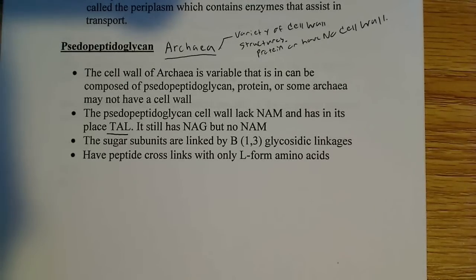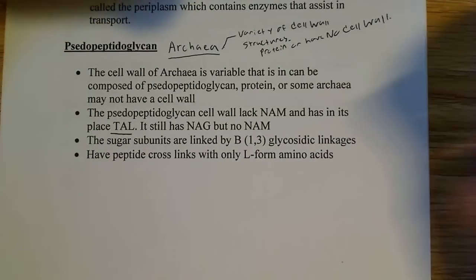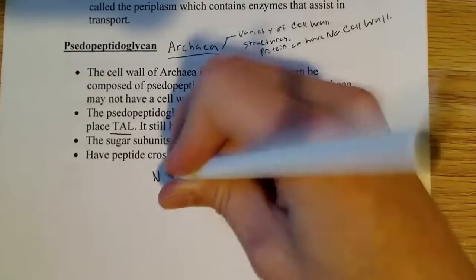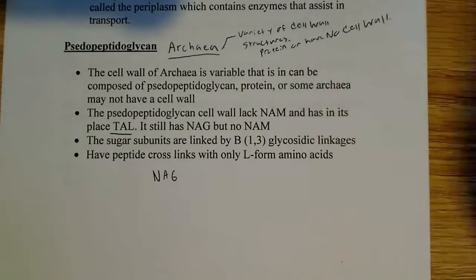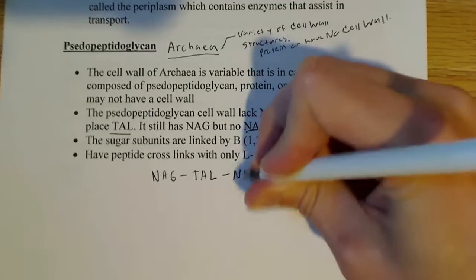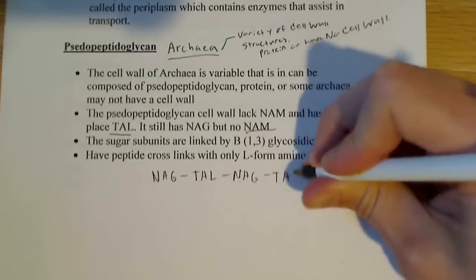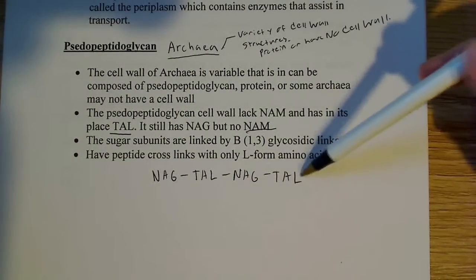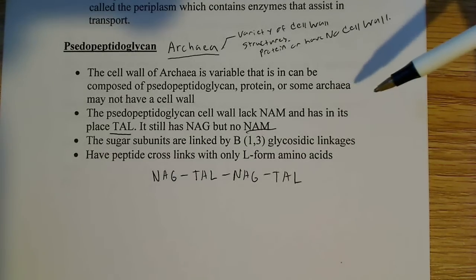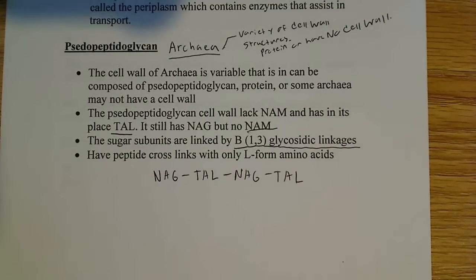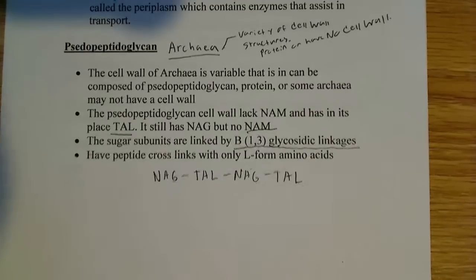In pseudopeptidoglycan, you're not going to find alternating NAG-NAM monomers or polysaccharides. You're still going to see NAG — N-acetylglucosamine — but there's no NAM; instead it's TAL. So these just alternate the same way: NAG-TAL, similar to before, just replacing one of the sugar subunits. These sugar subunits are linked by beta-1,3 glycosidic linkages.